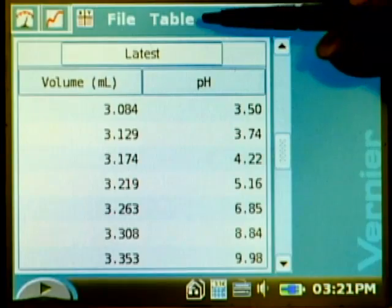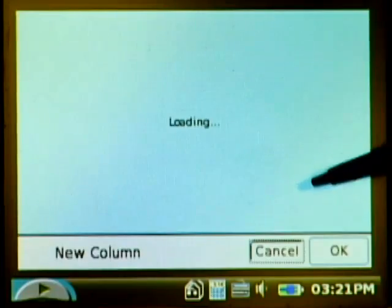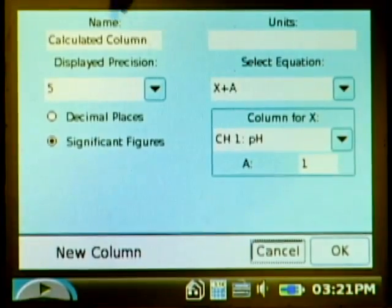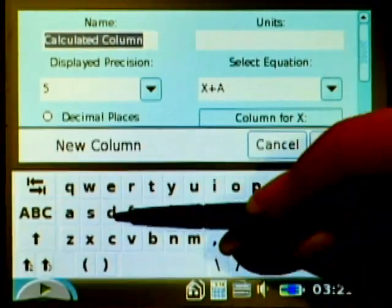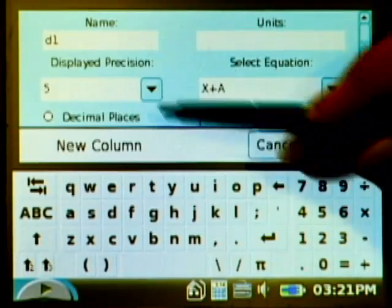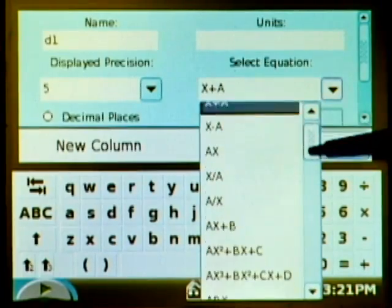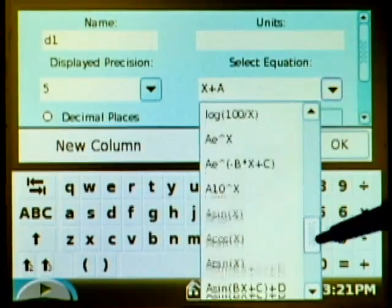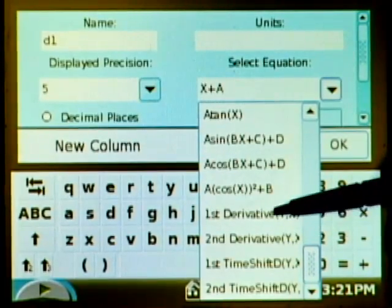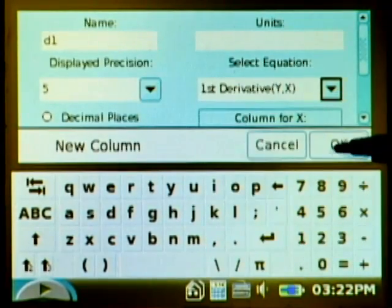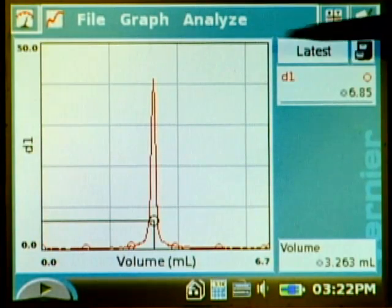One is to create a derivative of our data with a new calculated column. So I'm going to change the name from calculated column just to d1. We're going to do a first derivative here and the equation if I scroll down is already in here as first derivative of y with respect to x and say okay and it automatically then plots that for us on the graph.